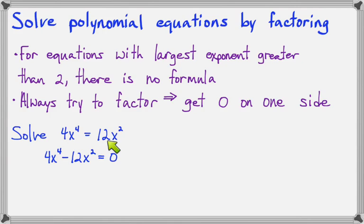4x to the 4th equals 12x squared. Since I see that the highest power is bigger than 2, it tells me I'm going to have to factor. And knowing that I have to factor, I know that all the terms need to be on one side of the equal mark. Now, if I look for a GCF, I have a 4 and 12. I'll get a 4 and an x squared.